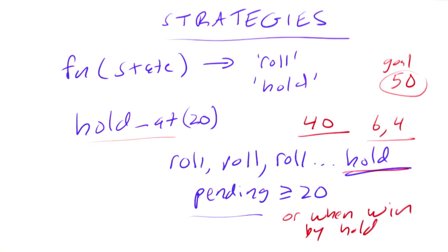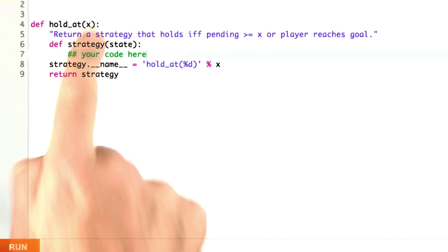So I want you to go ahead and implement that. And since hold at x is a whole family of strategy functions, hold at x is not going to be a strategy function, rather it's going to return a strategy function. And so I've given you this outline of saying we're going to define a strategy function, then we're going to fix up its name a little bit to describe it better, and then we're going to return it.